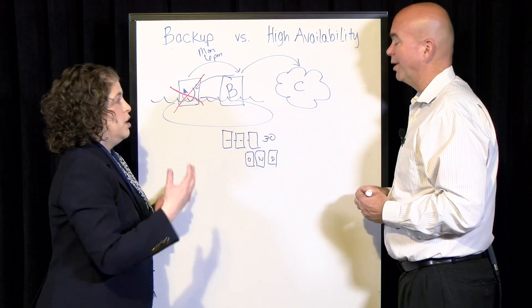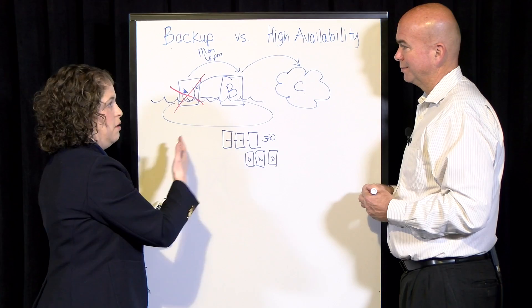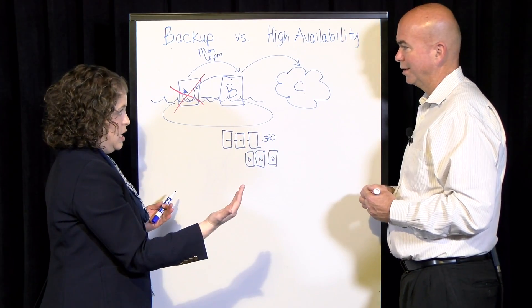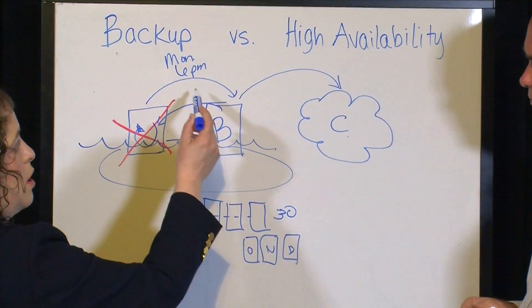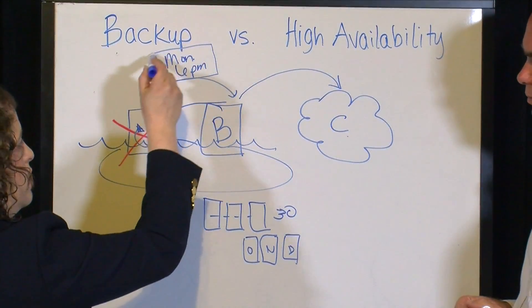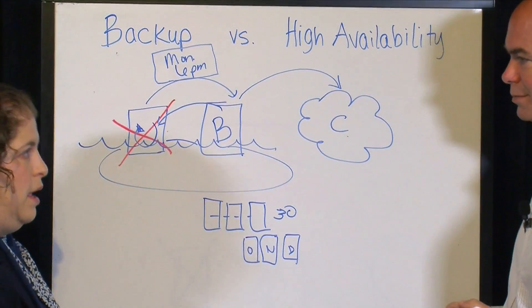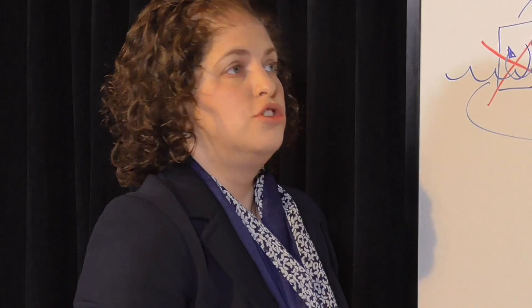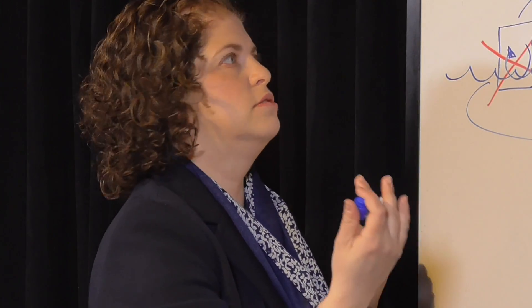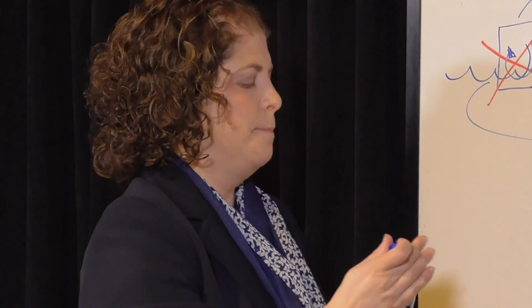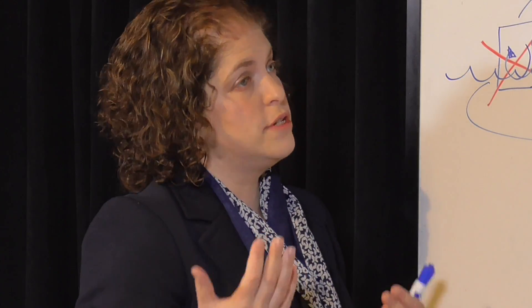In industry lingo, that would be the recovery time — from the moment you went down to the moment you went up was three days. That's sometimes pushing it for a lot of businesses. Your recovery point is going back to the last known copy, which was Monday at 6 p.m. So if you're up and running on Thursday, your recovery point is probably closer to four days. This is fine for some set of systems.